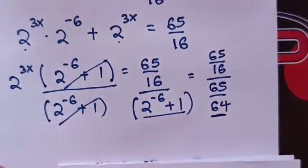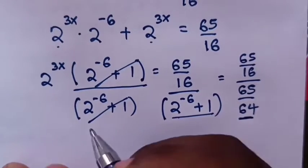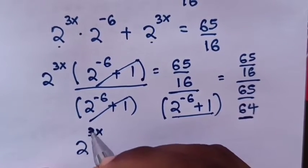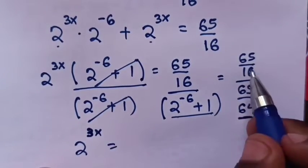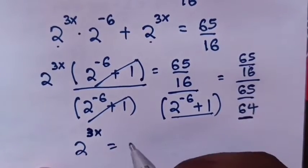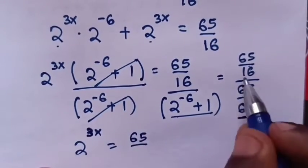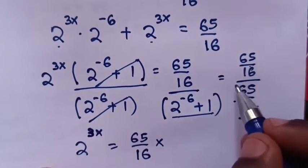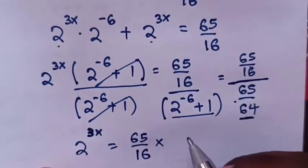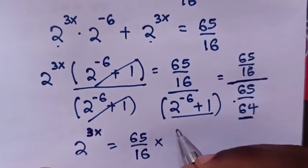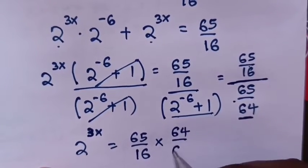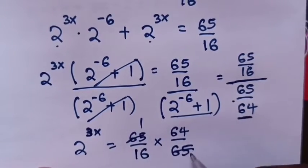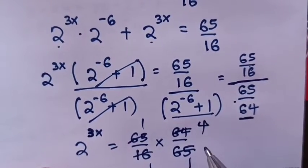So our equation becomes 2^(3x) = (65/16) ÷ (65/64). Dividing by a fraction means multiplying by its reciprocal, so it becomes (65/16) × (64/65). The 65s cancel, and 64/16 simplifies by a factor of 4.